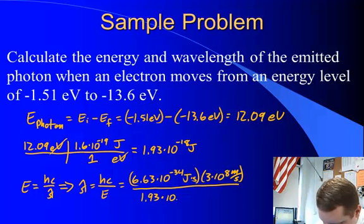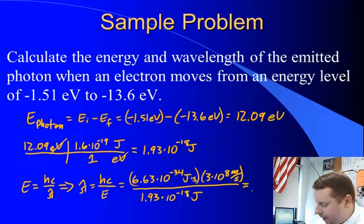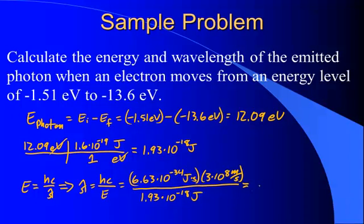Joules, 1.93 times 10 to the -18 joules. When I plug that into my calculator, I come up with a wavelength of about 1.03 times 10 to the -7 meters, which is also 103 nanometers.